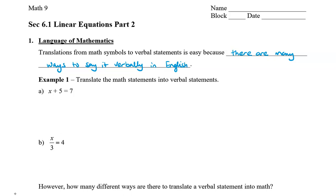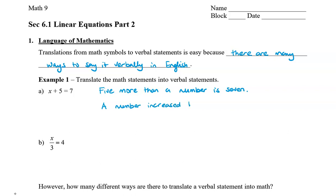So, for example, let's say that we wanted to translate the math statements into verbal statements here. The easy one is, if we just read it off, this would be x plus 5 equals 7. Now, x actually represents a number. So another way we could say this is: 5 more than a number is 7. We can also say a number increased by 5 is 7, or the sum of a number and 5 is 7. All of these words — the sum of, more than, increased by — all mean that a number is added to 5, and then we get 7.